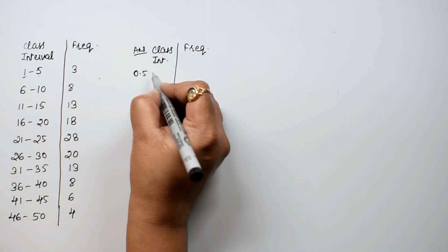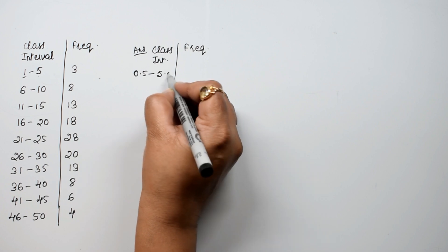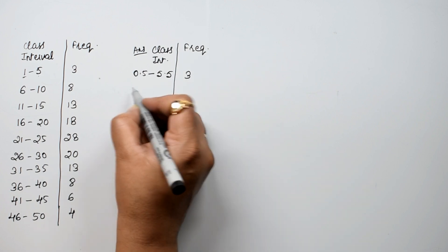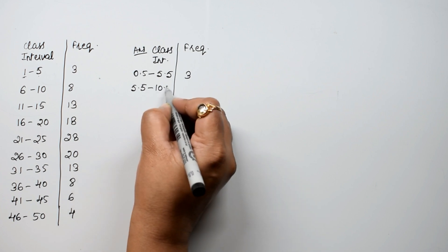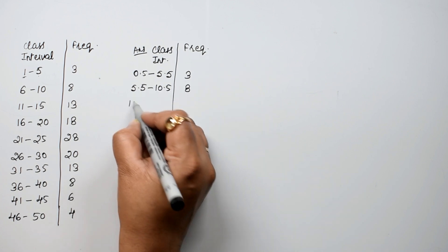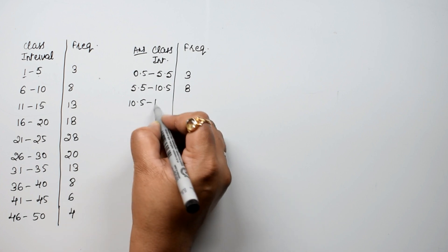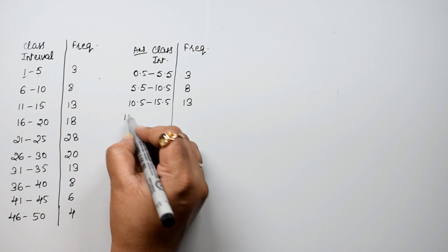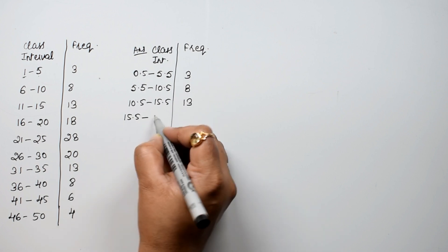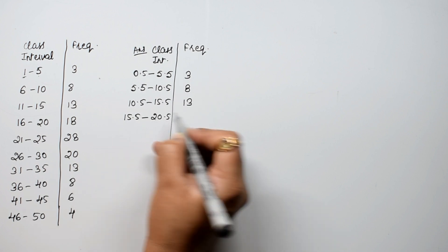We adjust the boundaries. From 0.5 to 5.5 the frequency is 3, 5.5 to 10.5 is 8, 10.5 to 15.5 the frequency is 13, and 15.5 to 20.5 is 18.